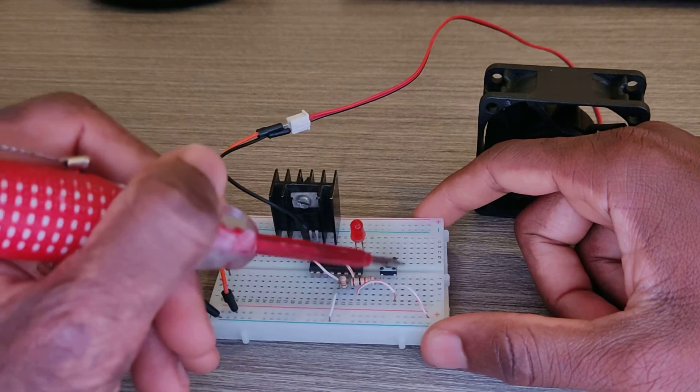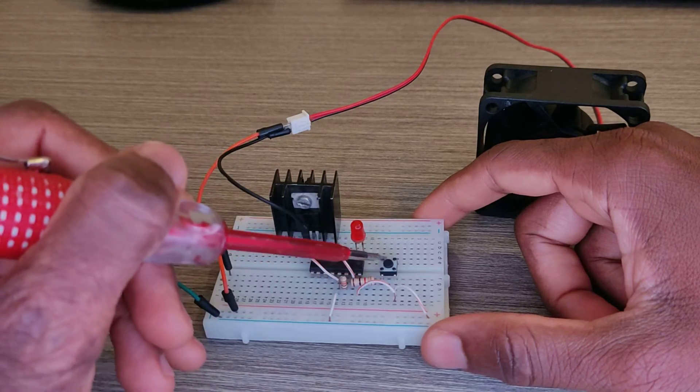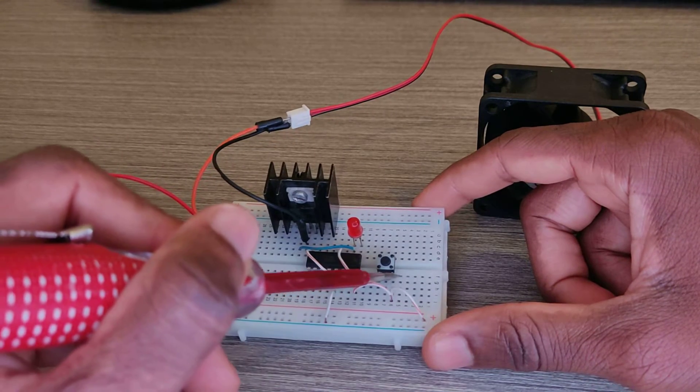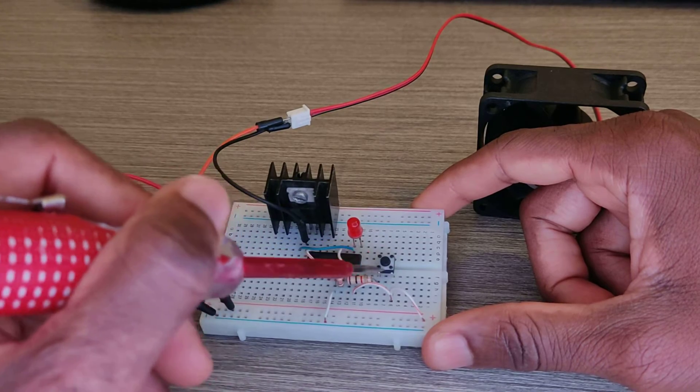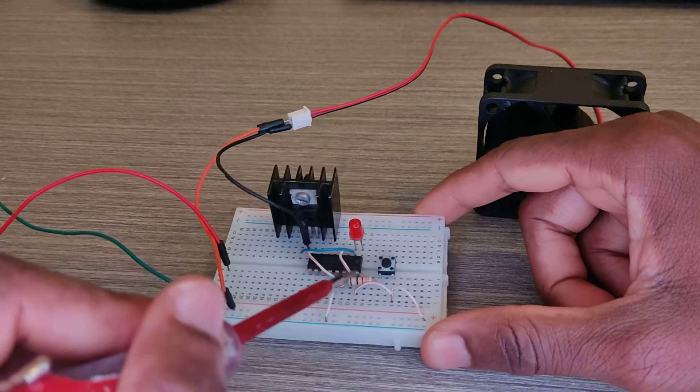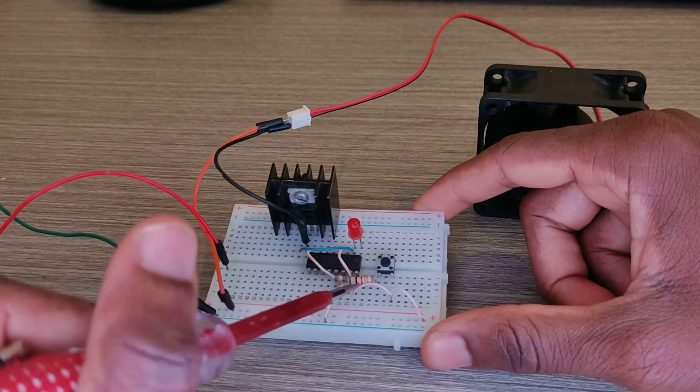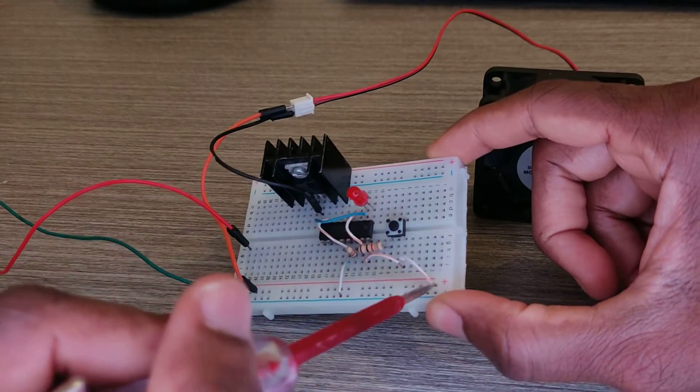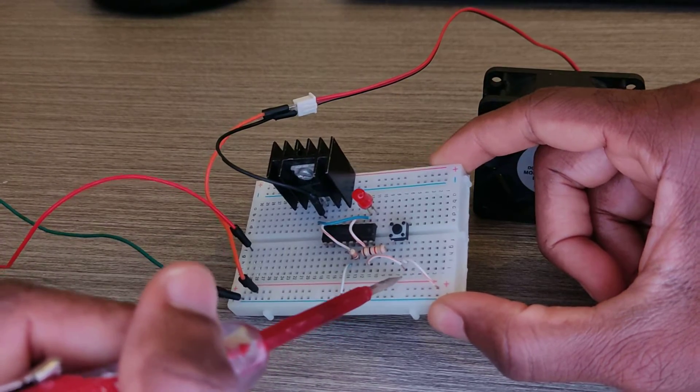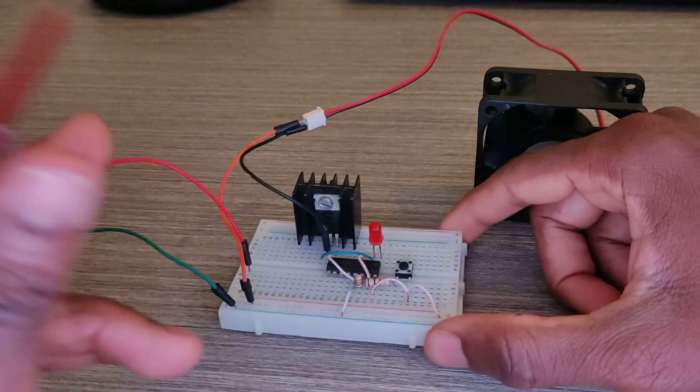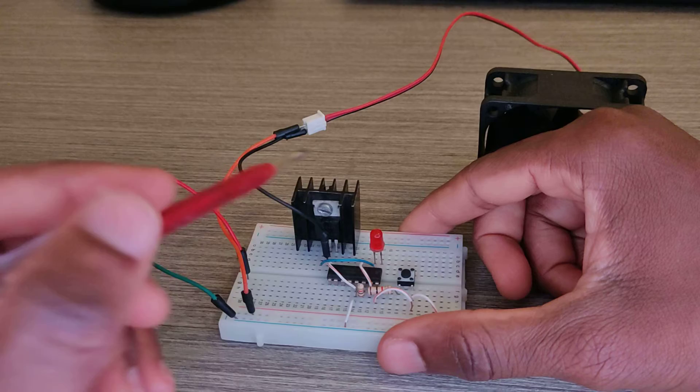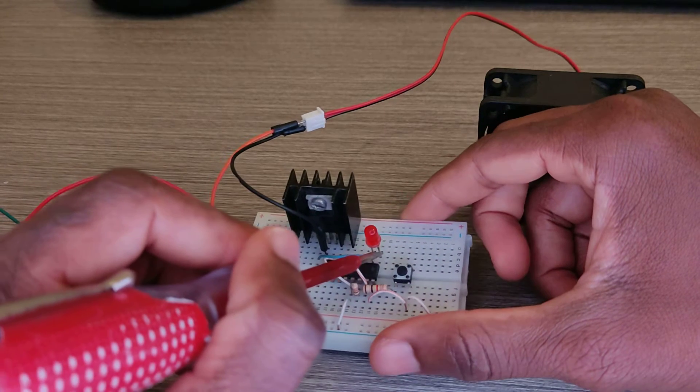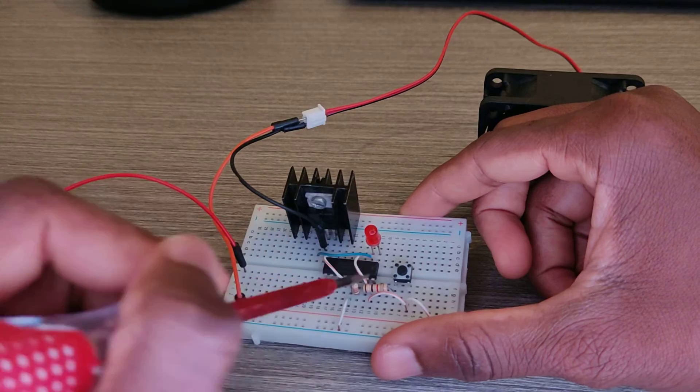And we connect this pin from the push button to VCC. So pin 16 and this pin here, they're going to VCC, and the VCC is 5 volts. Now the LED, the positive side is going to pin 2 and the negative side to pin 1.